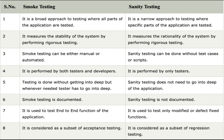Now let's look at the differences between smoke testing and sanity testing. Point one: smoke testing is a broad approach where all main parts of the application are tested for primary functionality. If they are not working, the build is returned to the dev team. Sanity testing is a narrow approach where only specific parts of the application are tested.